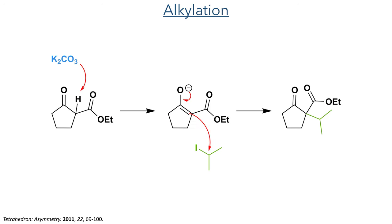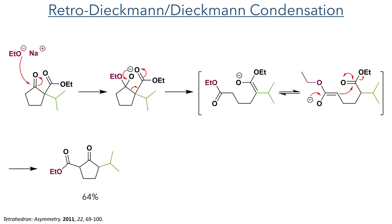To construct the coupling partner for the Suzuki reaction, they started with a cyclic beta-keto ester. This was first deprotonated using potassium carbonate to generate an enolate which reacted with propyl iodide, producing the quaternary centre. As it was necessary to have this propyl group on the other alpha position, they then carried out a retro-Dieckmann condensation.